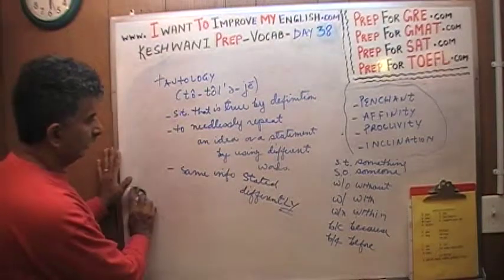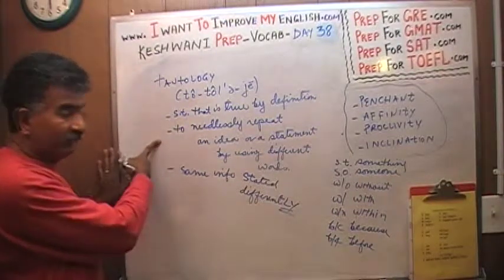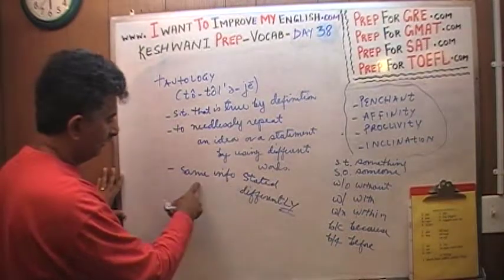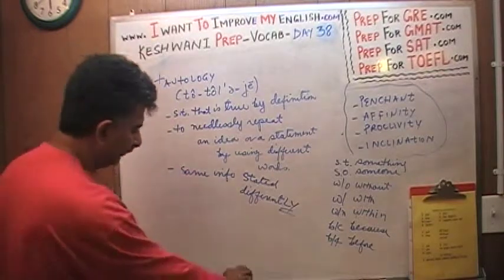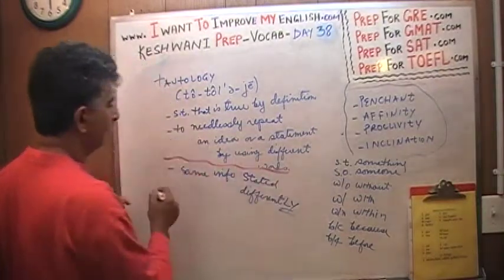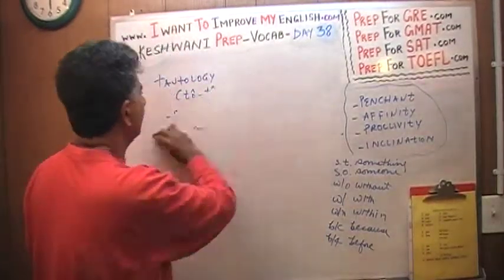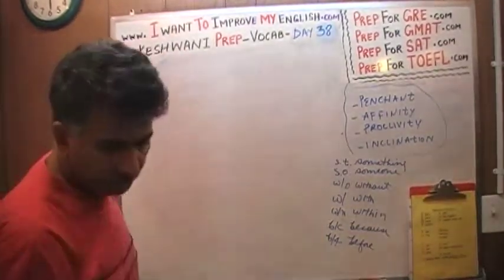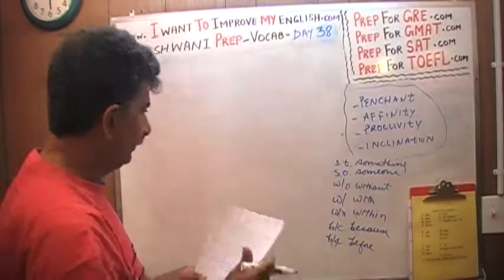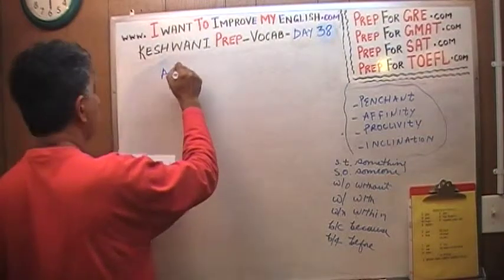Let's learn another word which is related to tautology. The word is axiom. An axiom is something that does not require proof, because it is taken as true by definition.